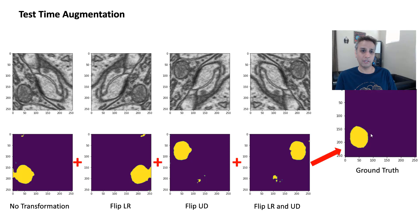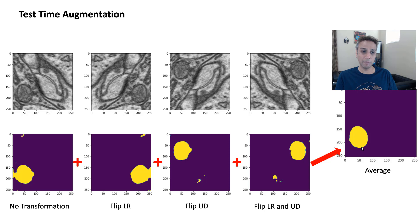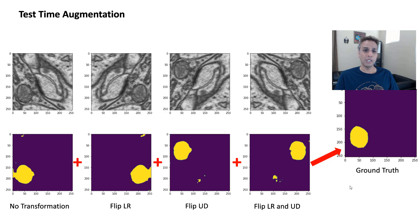Before combining the results I need to undo the transformations, and then combine them. This is the average of all four predictions after undoing the transformations. If you compare this with the original label — the ground truth — you can see how this combined result is so much better than each of the individual ones. Now let's jump into the code to see how we can actually do this.